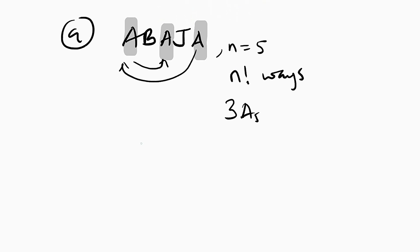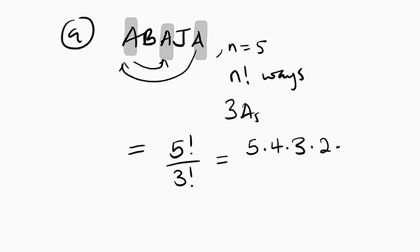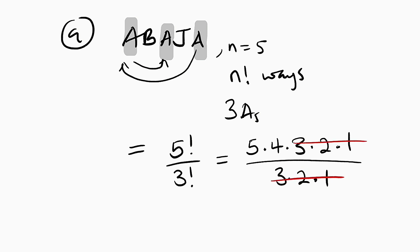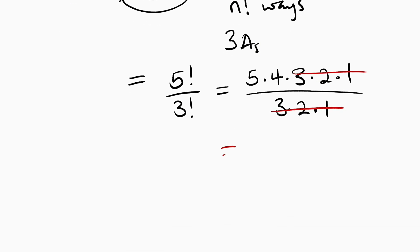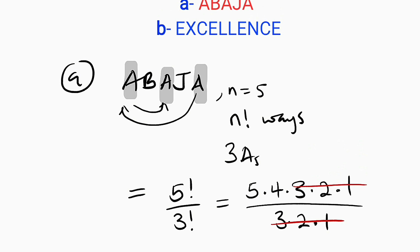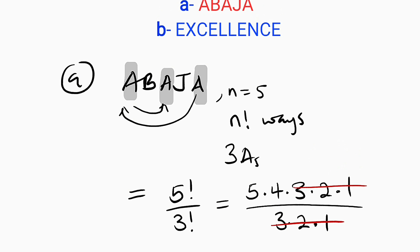So we have three A's. The number of ways we can arrange ABAJA will be equal to five factorial divided by three factorial. Three factorial stands for the number of ways we can arrange the A's since we cannot differentiate them. This equals five multiplied by four multiplied by three multiplied by two multiplied by one, divided by three multiplied by two multiplied by one. Three down to one cancels, leaving five multiplied by four, which equals twenty. So we have twenty different ways of arranging the letters of the word ABAJA.